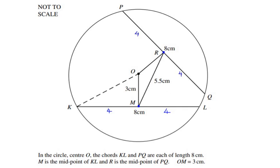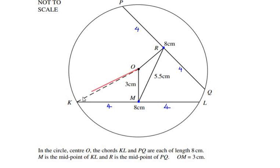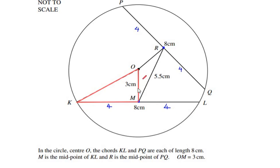OM is given as three centimeters and they want us to find out the length of OK. To find that out, let us consider the right angle triangle OMK. This resembles a right-angled triangle because OM is perpendicular to KL, as M is the midpoint.